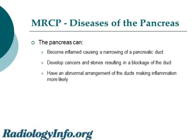Not unlike the bile ducts, the pancreas can get a variety of diseases. It can get inflamed, which can result in a narrowing of a pancreatic duct. Cancers and stones also occur in the pancreas and can cause blockages. The arrangement of the ducts in the pancreas can be abnormal by birth, making some of those diseases more likely to occur later in life.